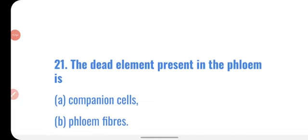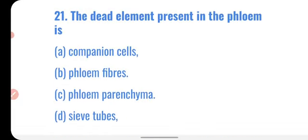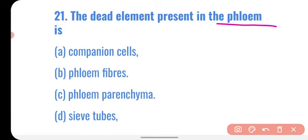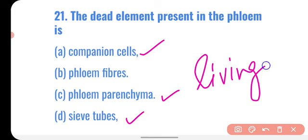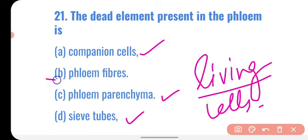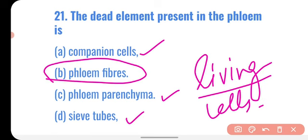Next question: the dead element present in the phloem is — phloem is a complex permanent tissue containing companion cells, phloem fibers, phloem parenchyma, and sieve tubes. Companion cells, phloem parenchyma, and sieve tubes are living cells. Only phloem fibers are dead. So the dead element present in the phloem is phloem fiber.